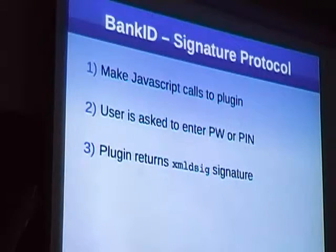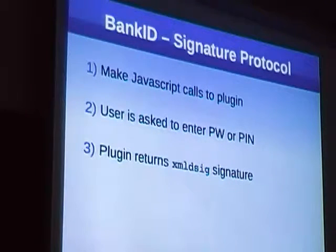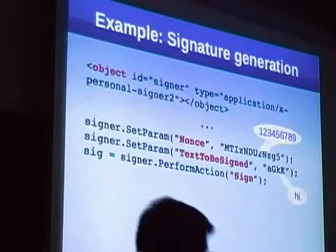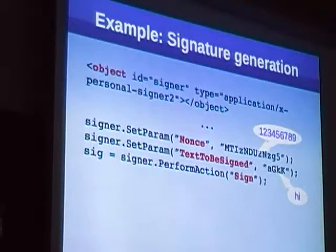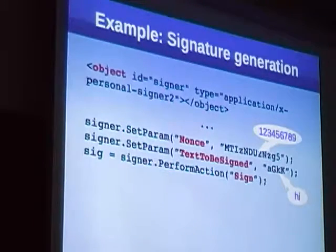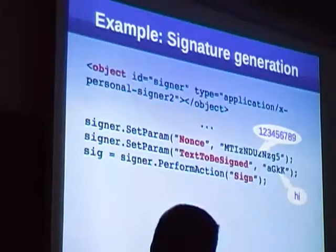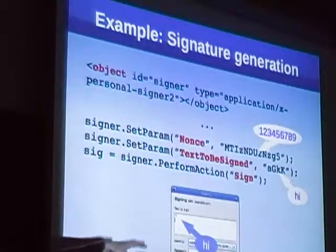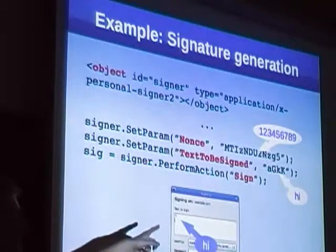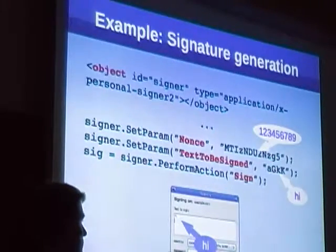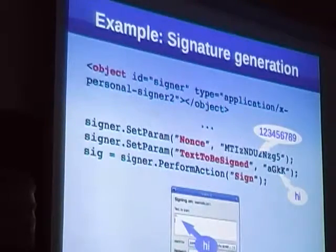Looking at the signature: the way you get a signature from the official software is really simple. You send a different custom object. You send a null value and some text you want to sign to the plugin. Then you call the function on it and get a callback. First you get a confirmation window where you see the message you want to sign, and you can also enter a password and select your token to use.